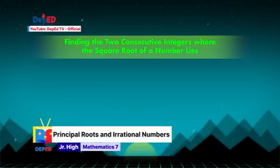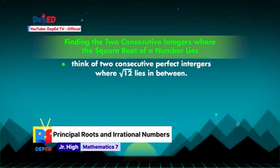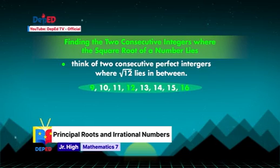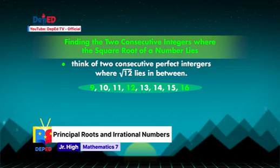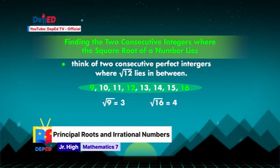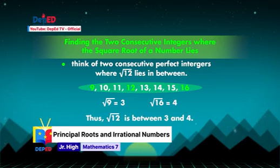Let's have an example. Find two consecutive integers where square root of 12 lies in between. Think of two consecutive perfect square integers where 12 is in between them — 12 is between the perfect squares 9 and 16. Now take the square roots of these numbers. Since the principal root of square root of 9 is 3, and the principal root of square root of 16 is 4, thus square root of 12 is between 3 and 4. Easy, right?